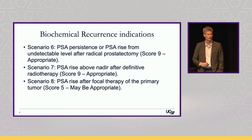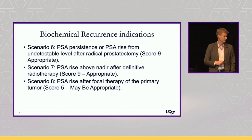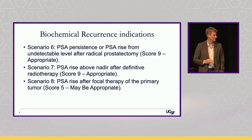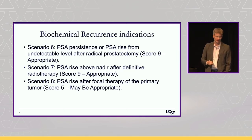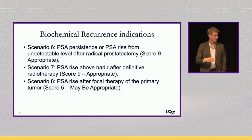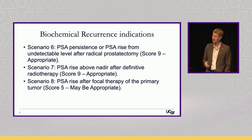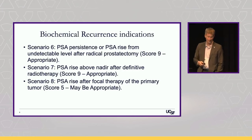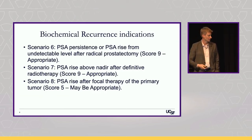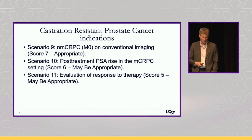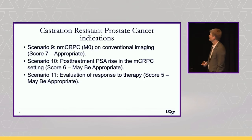Biochemical recurrence indications are very straightforward — everyone agrees on using PSMA PET in biochemical recurrence. Interestingly, no guideline has really set a PSA cutoff criterion for what constitutes biochemical recurrence. I personally think it should not be in a guideline, because every patient is different and a PSA of 0.1, 0.2, or 0.5 is very different depending on PSA doubling times, age, and other risk factors. We've deliberately left that to physician judgment.